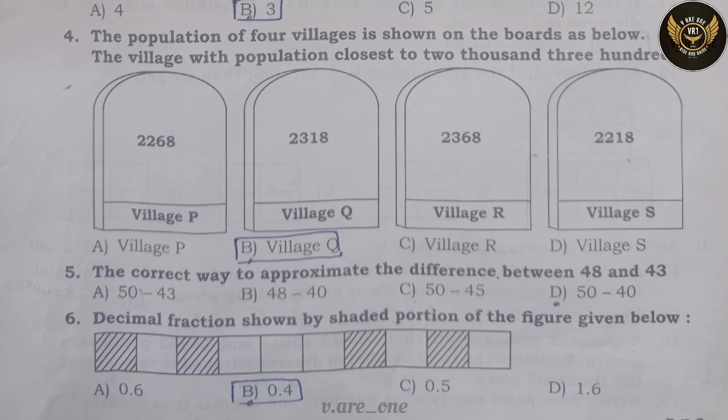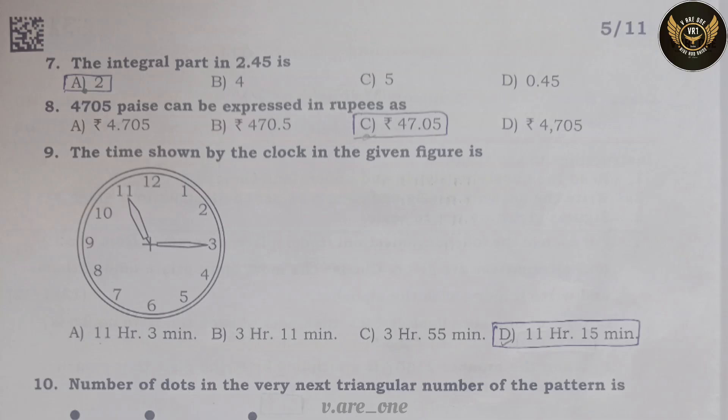Sixth, the decimal fraction shown by the shaded portion of the figure given below is 0.4. Seventh, the integral part in 2.45 is Option A: 2.